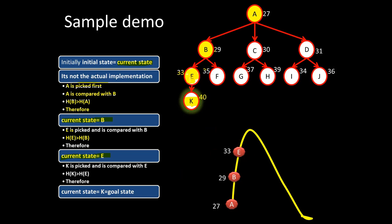Moving from E, there is only a single child node. K is picked and compared with E. The heuristic value of K is greater than that of E, therefore current state is set to K. K is the goal state, so we stop the procedure and plot K.